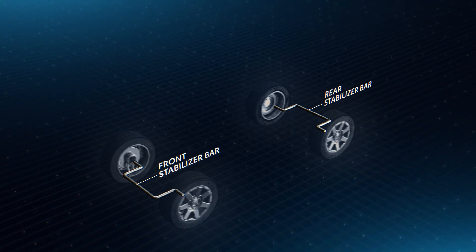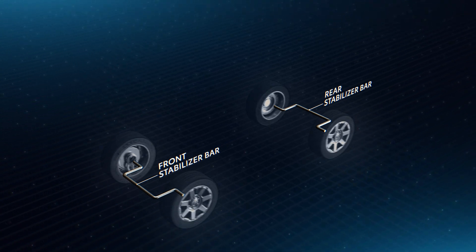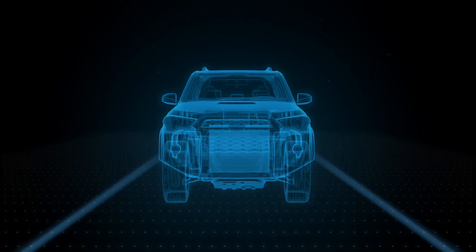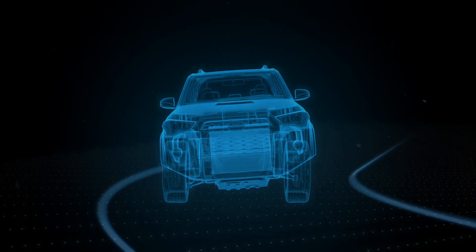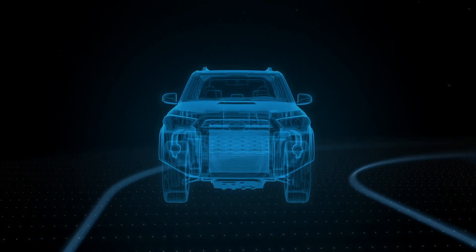Modern vehicles rely on stabilizer bars to help control body roll when cornering. Body roll can greatly affect driving stability, and controlling it is particularly important in taller vehicles like SUVs.